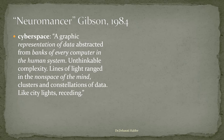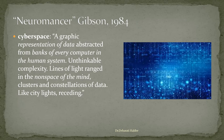According to Gibson, cyberspace is a graphic representation of data abstracted from the banks of every computer in the human system. It has unthinkable complexity. There are lines of light ranged in the non-space of the mind, clusters and constellations of data like city lights receding. As you can see in this graphic image, it is actually a graphic representation of the data and it has got lights, unthinkable complexity and lights ranged in the non-space of the mind. Please remember that this is actually a fictional definition of cyberspace.